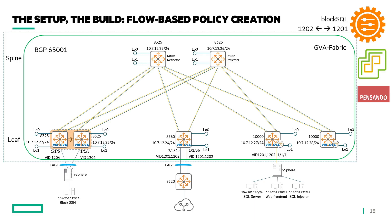Finally, there's a scenario in the Pensando Services Manager where you can view active flows and, based on those flows, select one and assign it to an existing policy to block it. In this example, we have an SQL injector injecting SQL traffic into an SQL server over TCP port 3306. I'll show how to find that active flow in the PSM, add it to an existing policy, and block that SQL traffic.